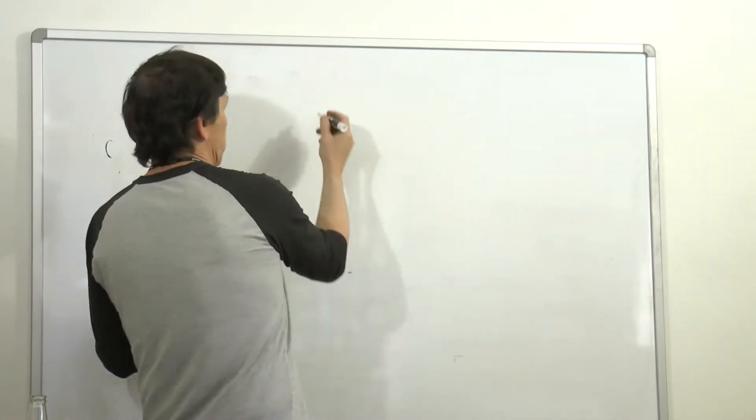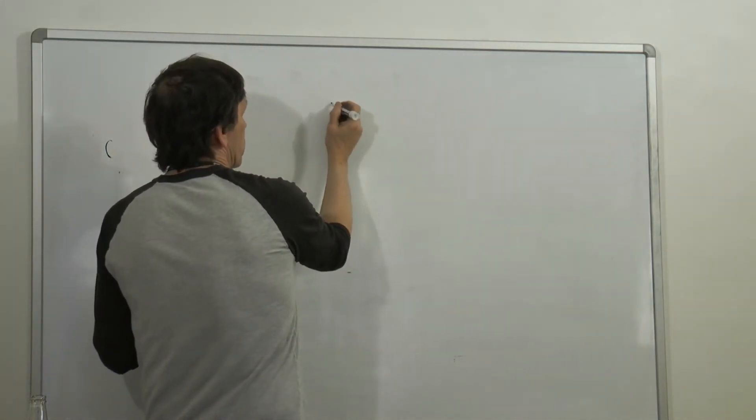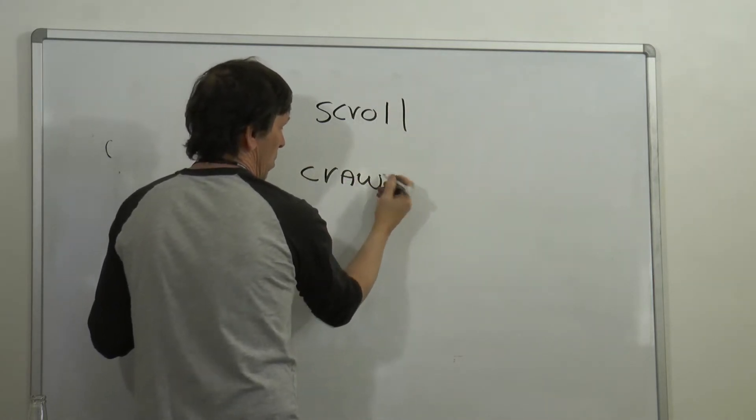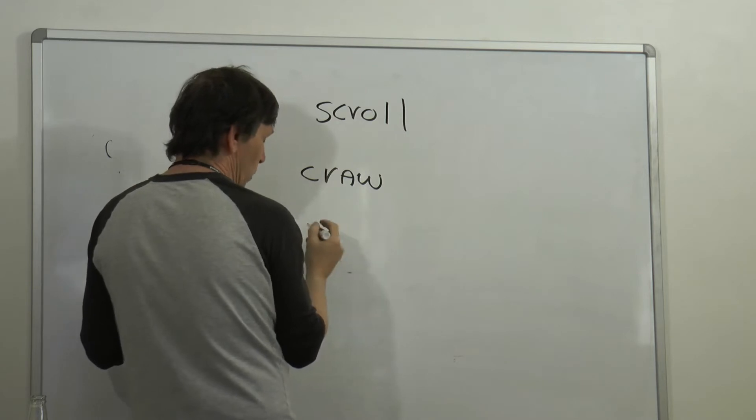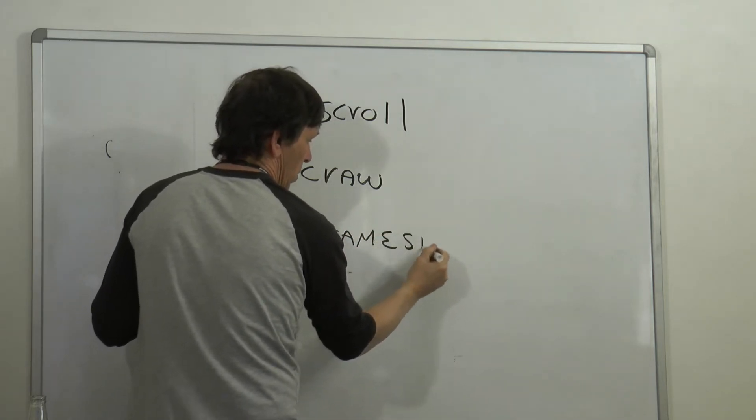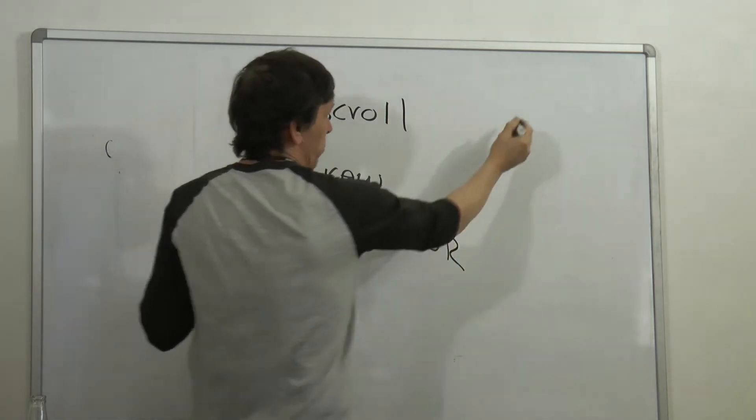Now the different kinds of text pages you're going to run into - there's a scroll, there's a crawl, there's one called the frame store.